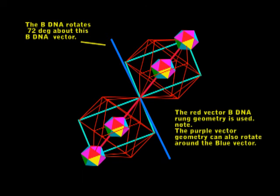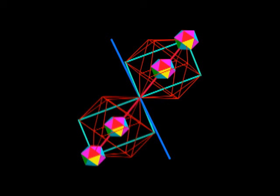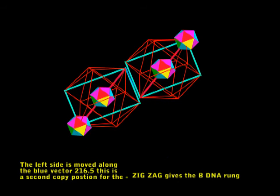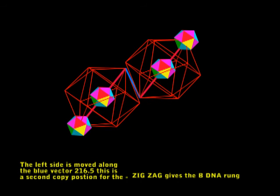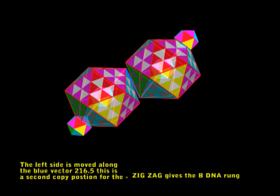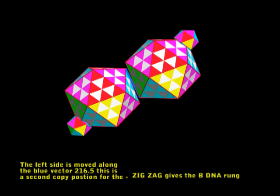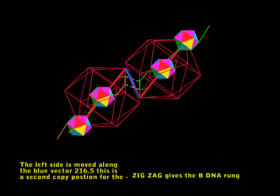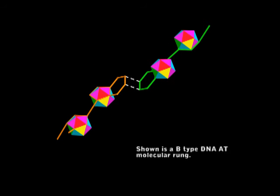Now I'll convert this assembly into a couple of ZDNA molecular rungs showing the center red and yellow vector. Now we'll switch from the red and yellow Z axis to the blue BDNA axis. For this I'm only going to show the red vector BDNA stuff. This is something different. The ZDNA made the molecules straight away. The BDNA needs to go to the second copy. So I'm just moving this one to the copy. Now we've got a zigzag configuration that gives us a BDNA rung. Then I'll convert it into a BDNA molecular AT rung.